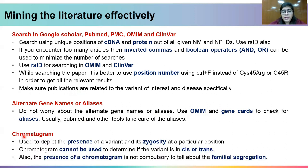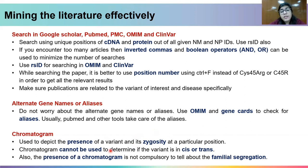An important point about chromatograms: a chromatogram is just a representation used to depict the presence of a variant and its zygosity — whether the variation is homozygous or heterozygous at a particular position. It has nothing to do with determining whether the variant is in cis or trans. That can only be ascertained when you actually genotype the parents and see whether the variant alleles are coming from each parent or only from one parent.